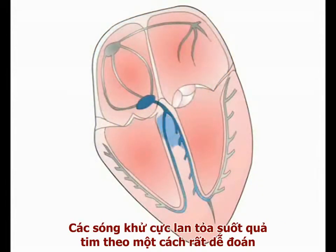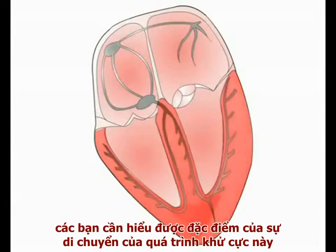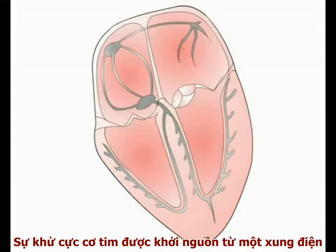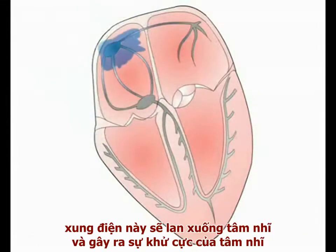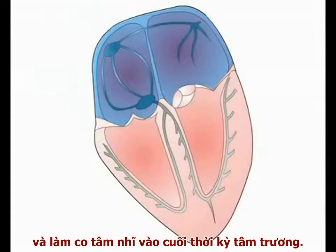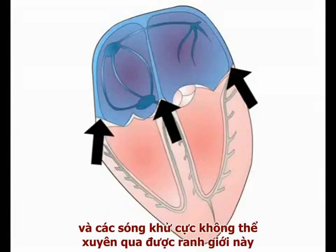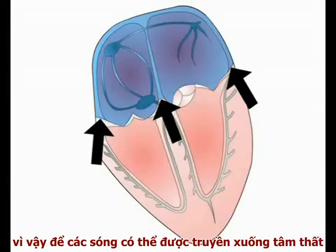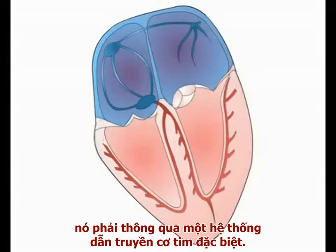The depolarization wave spreads through the heart in a highly predictable pattern, and to understand the ECG readout, the pattern of spread of cardiac depolarization needs to be understood. Cardiac depolarization is triggered by an electrical pulse generated in the sinoatrial node. This electrical pulse then spreads through the atria, triggering their contraction late in diastole. The atria and ventricles, however, are separated by a non-conducting fibrous septum. The depolarization wave cannot penetrate this barrier, and in order to activate ventricular contraction, the wave must be transmitted into the ventricles by the specialized cardiac conducting system.